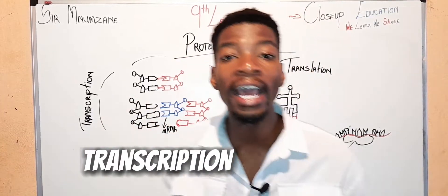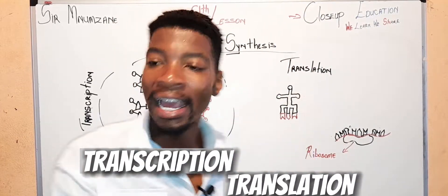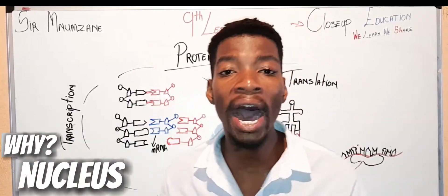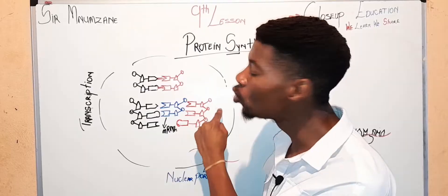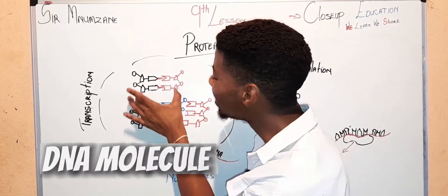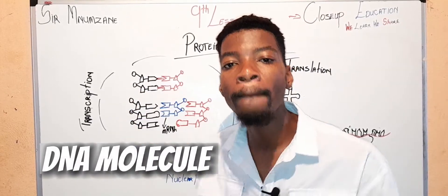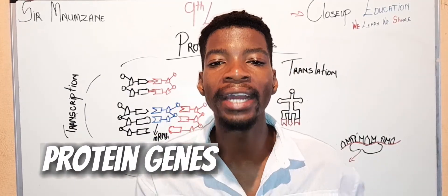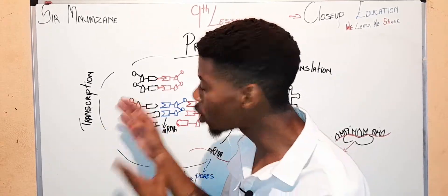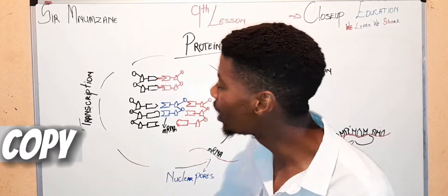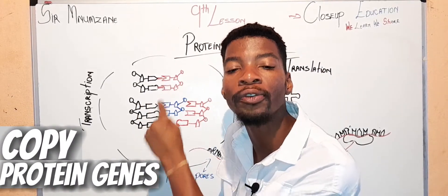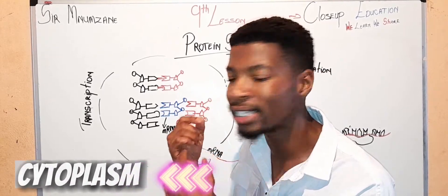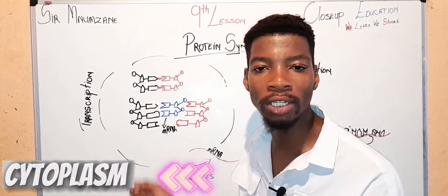There is transcription and translation. Transcription occurs inside the nucleus. Why inside the nucleus? Because the nucleus contains a DNA molecule, and a DNA molecule contains protein genes. So the process of transcription is to copy the genes found from the DNA out of the nucleus into the cytoplasm. That is the process of transcription.